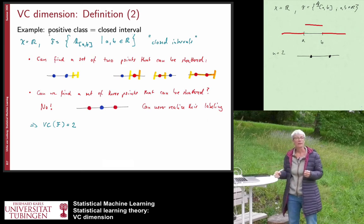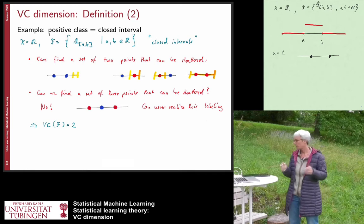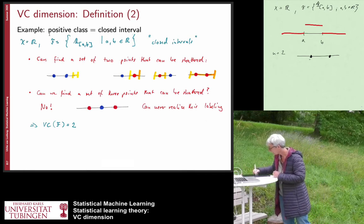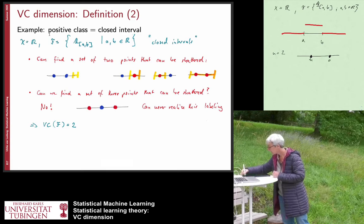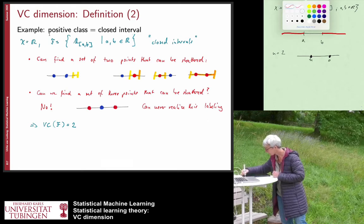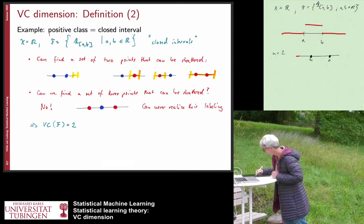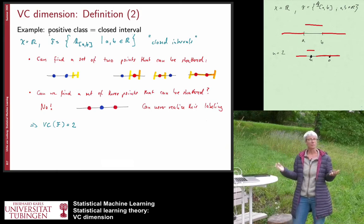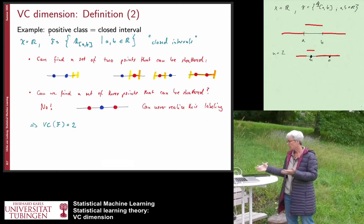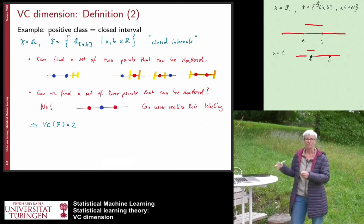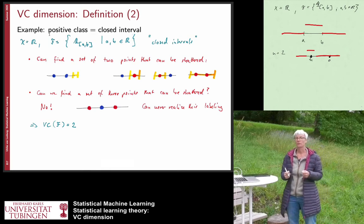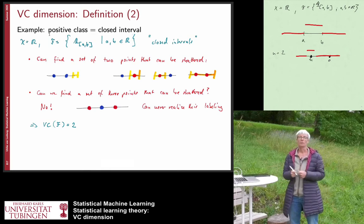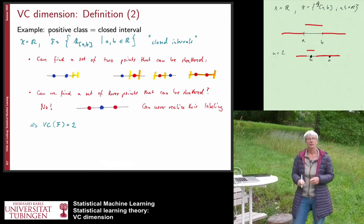The answer for n=2 is yes. For example, if we want the first point labeled plus one and the second labeled zero, we choose the interval that covers only the first point. We can do it the other way around, have both being one, or both being zero — there are four different labelings and we can realize all of them.